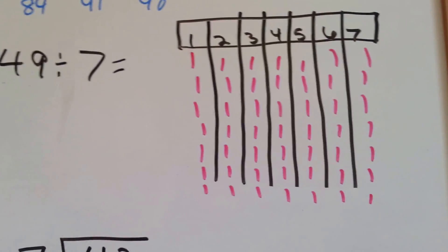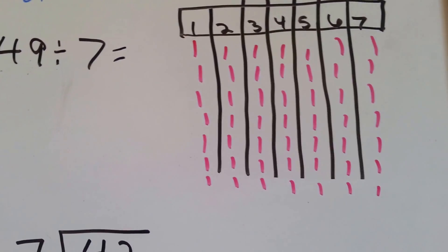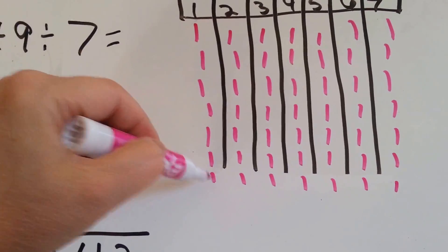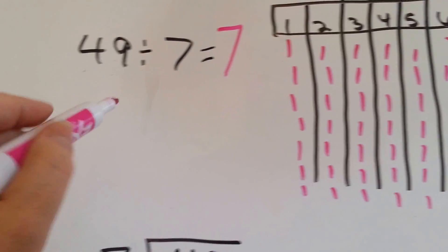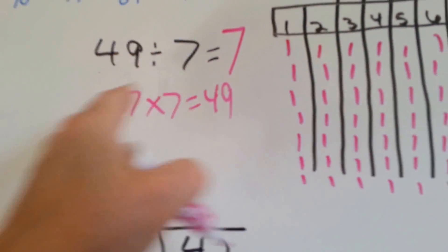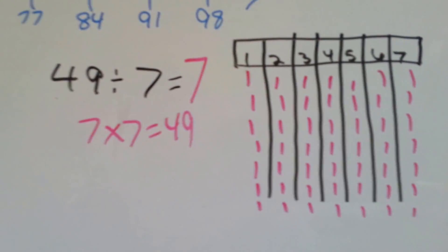Now all we need to do is count how many is in one of the columns. 1, 2, 3, 4, 5, 6, 7. And guess what? 7 times 7 equals 49. So that makes sense that 49 divided by 7 is 7.